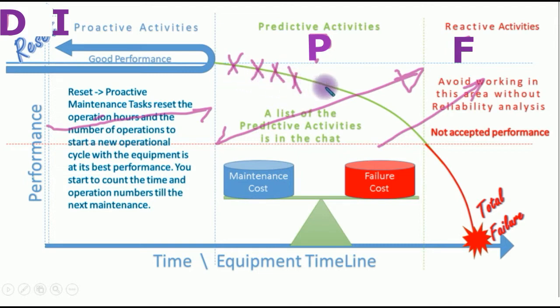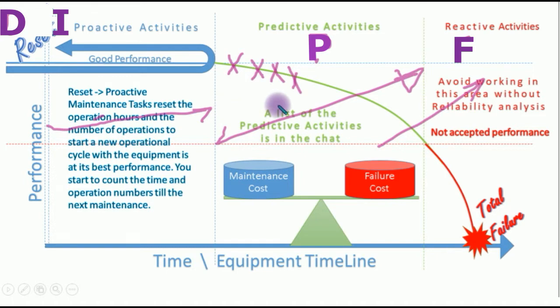So here you are working in predictive activities. Now, if you manage to extend the time — if this axis is the time and you manage to extend from here to here — that's great. You have already added some time for production to operate more, and you have diluted your maintenance cost. You had extended your maintenance cost over a longer time — instead of doing one or two maintenance activities per month, you will be doing one maintenance activity per month.